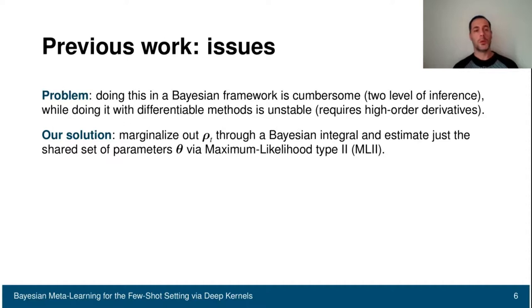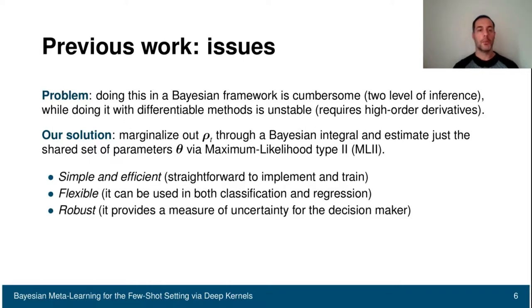What we propose in this paper is to marginalize out rho task-specific parameter through a Bayesian integral and just estimate the set of shared parameter theta through a maximum likelihood type 2 approach. This is simple and efficient because we get rid of the inner loop, flexible since it can be used for both classification and regression, and also robust, since with the Bayesian framework we can provide a measure of uncertainty.